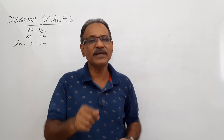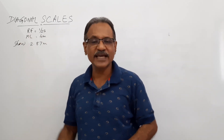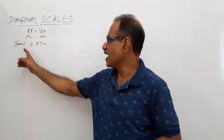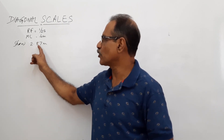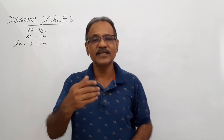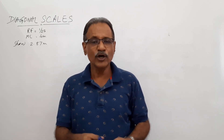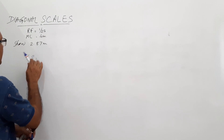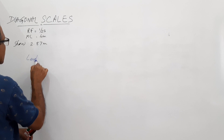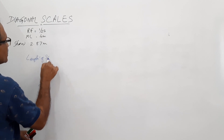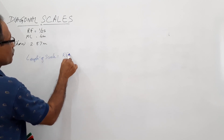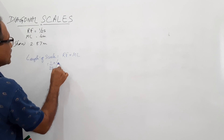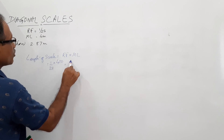We are going to do a typical diagonal scale question where the RF of the scale is 1/25, the maximum length to be measured is 4 meters, and after drawing the scale you are asked to show a distance of 2.87 meters on it. The length of scale equals RF into maximum length equals 1/25 into 400 centimeters equals 16 centimeters.